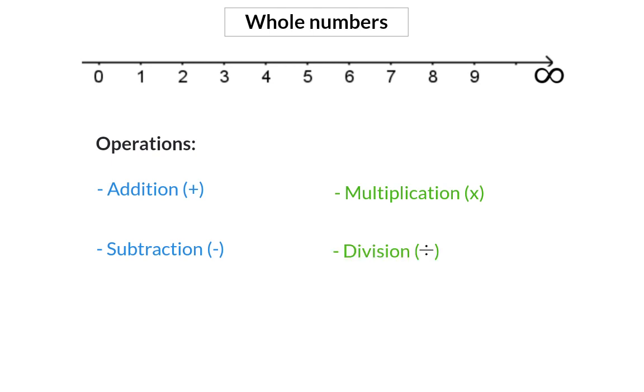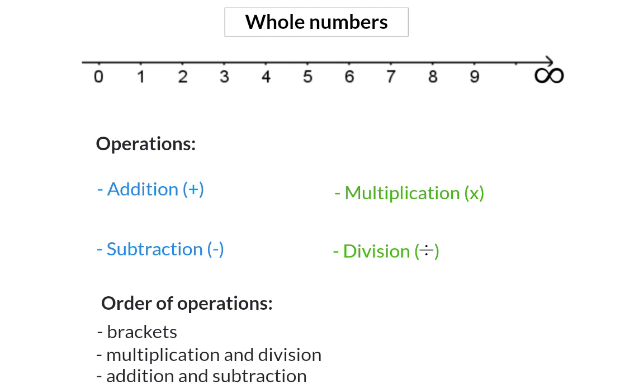When an expression consists of more than one of these operations, it is important that you know in which order the operation should be done. If there are brackets, the operations inside the brackets always has to be done first. Then you move on to multiplication and division. And lastly, you will do addition and subtraction. Multiplication and division are equal in priority, so you can choose which one you do first. That is the same for addition and subtraction.